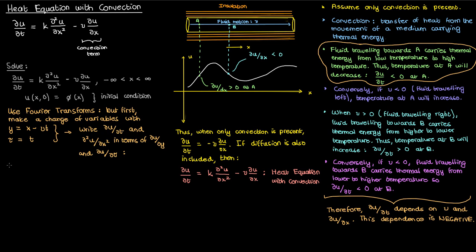And if we take the partial derivatives of u with this change of variables in mind we'll find that the partial of u with respect to t is the partial of u with respect to y times dy/dt plus the partial of u with respect to tau times dtau/dt. And this is just straight up from the chain rule.